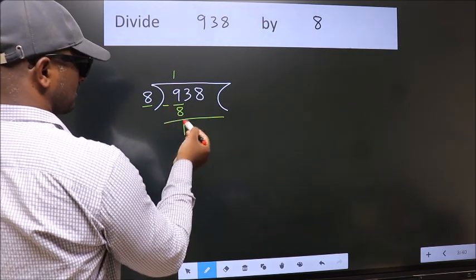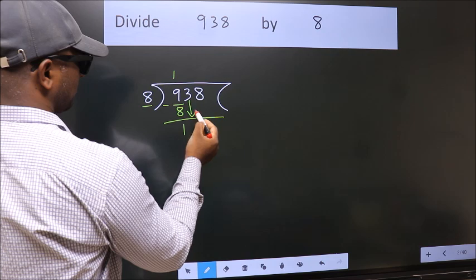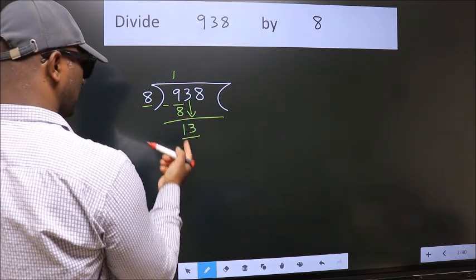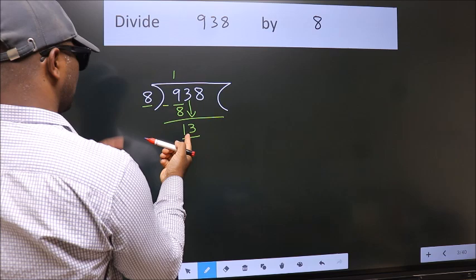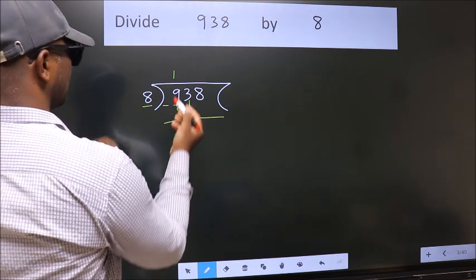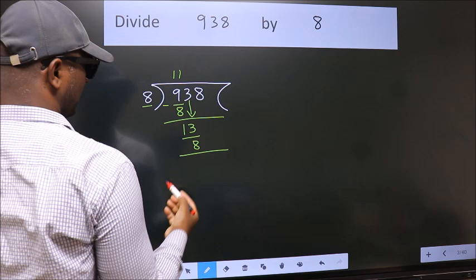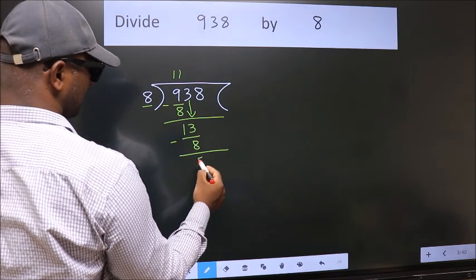After this, bring down the beside number. So 3 down. So 13. A number close to 13 in the 8 table is 8 once 8. Now we subtract. We get 5.